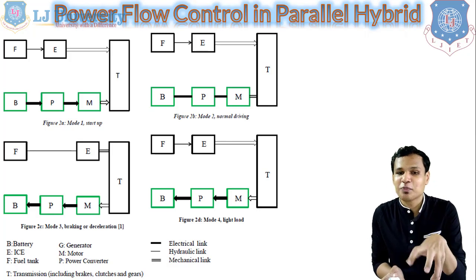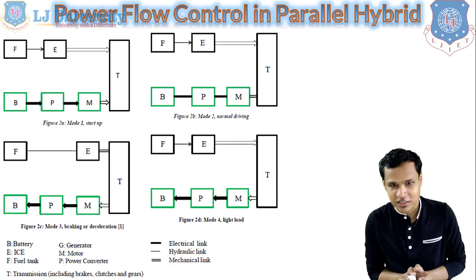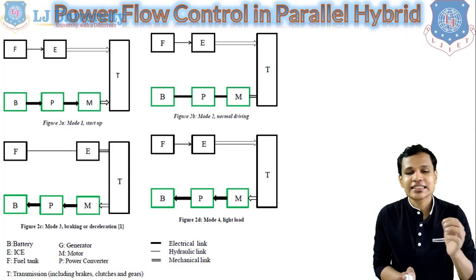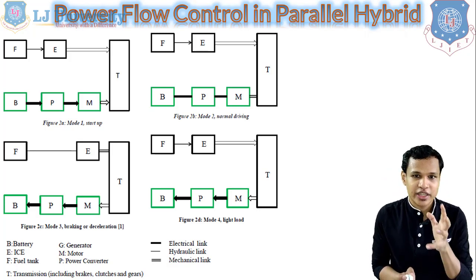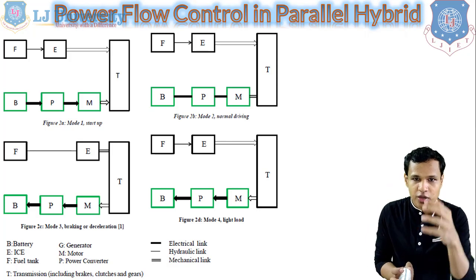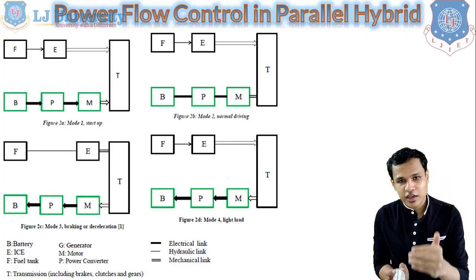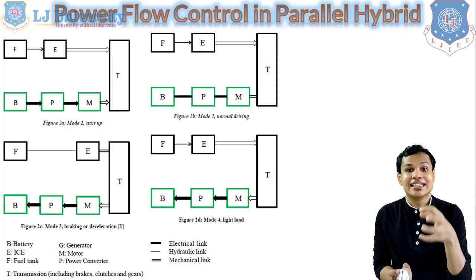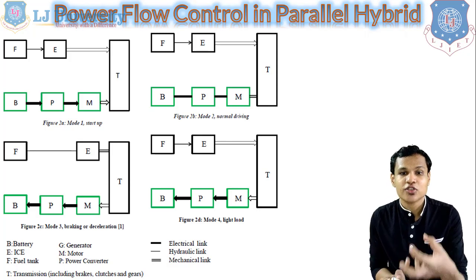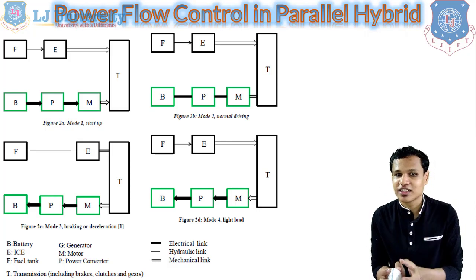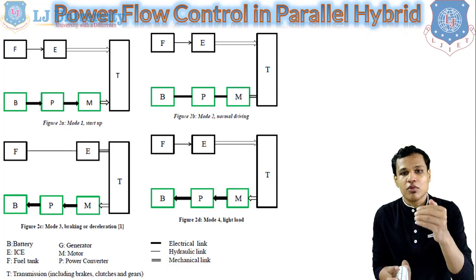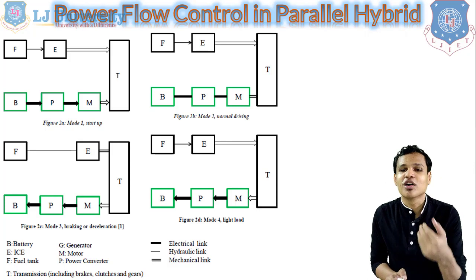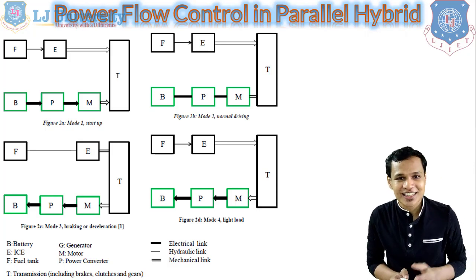So the regenerative braking system works in the parallel hybrid system as well. The last figure, 2D, is mode 4 — the light load condition. The difference from normal driving (figure 2B) is that the engine is generating more power than required for the transmission system. The extra power not required by the transmission is transmitted back to the motor, which works as a generator and transmits the power via the power converter to the battery for charging.